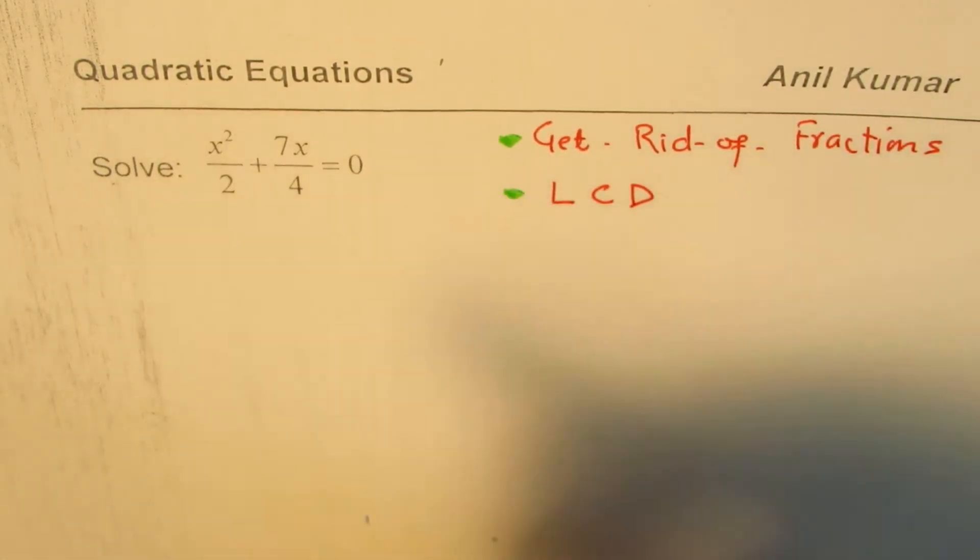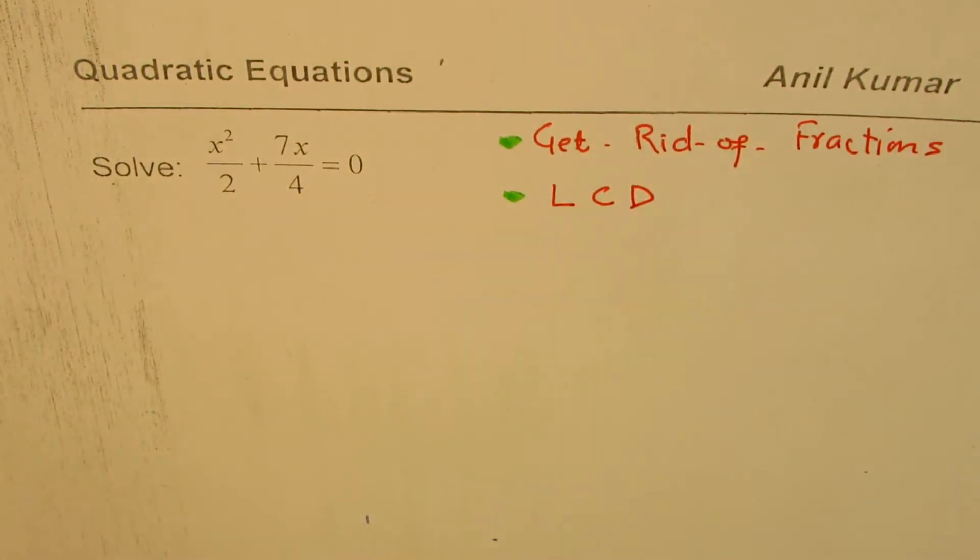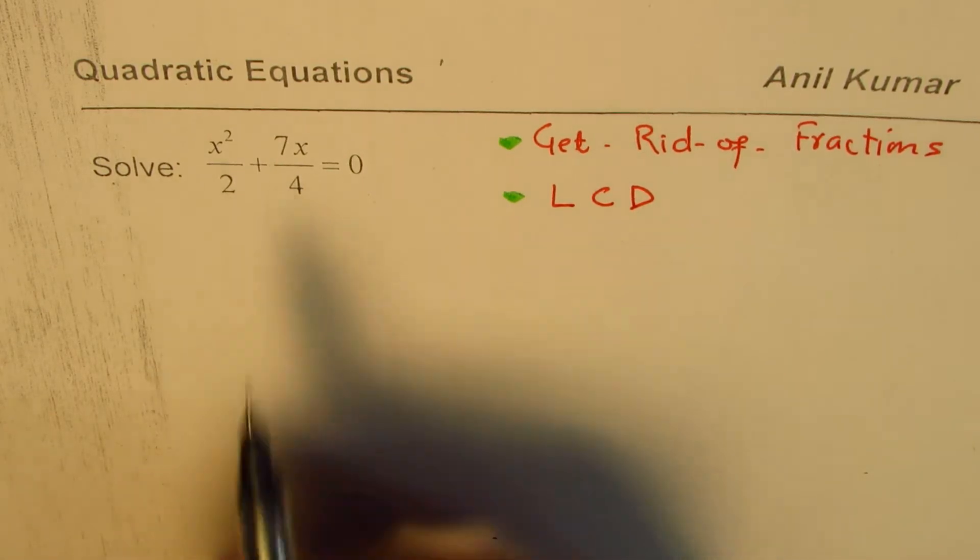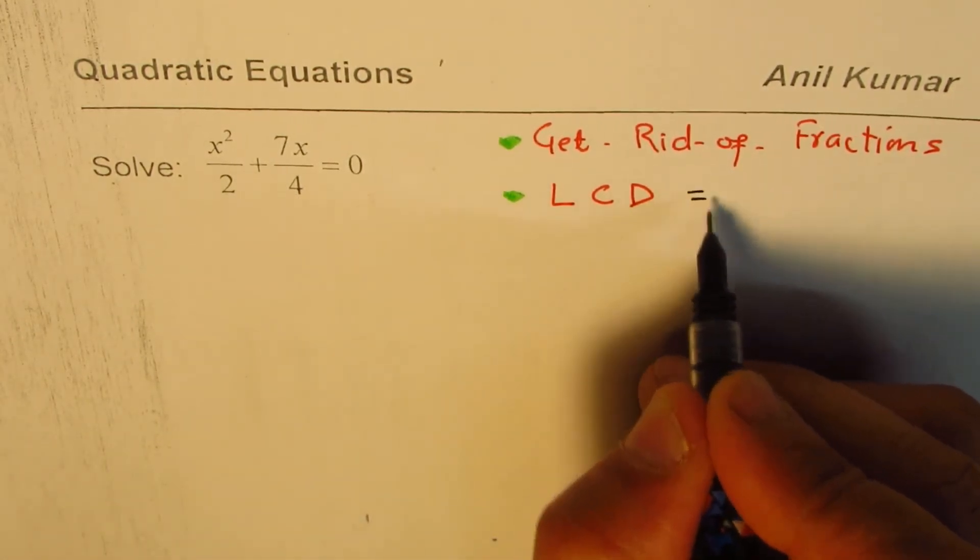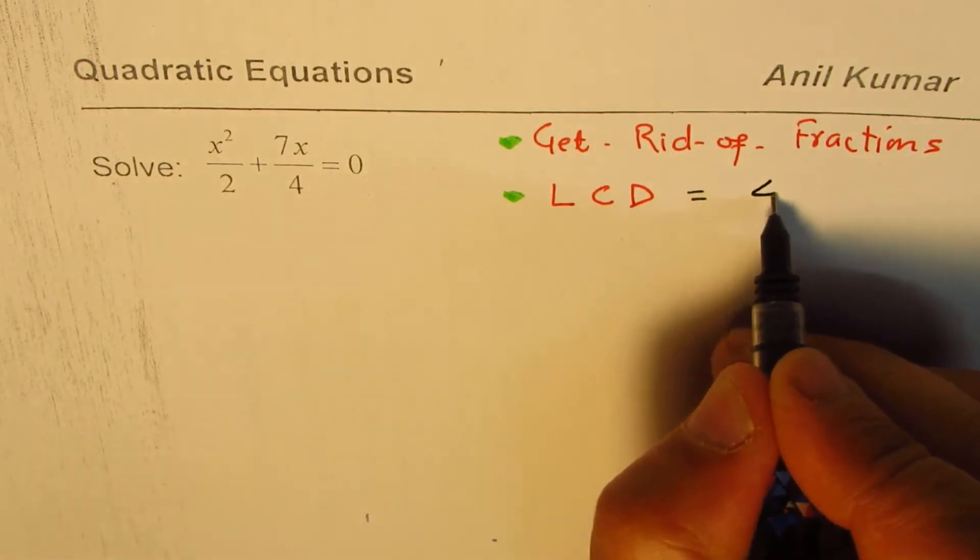So that is the key. Now, in our case, 2 and 4 are the numbers in the denominator. So the lowest common denominator is 4.